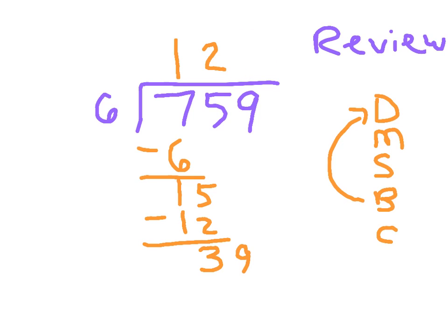And so that's why we knew also that we were not done. Thirty-nine divided by six is six. And six times six is thirty-six. And thirty-nine minus thirty-six is three. We have to write that three as our remainder.